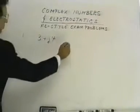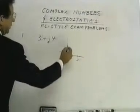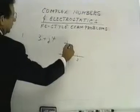Well, 3 plus J4 represents a complex number, real axis 3, imaginary axis 4.